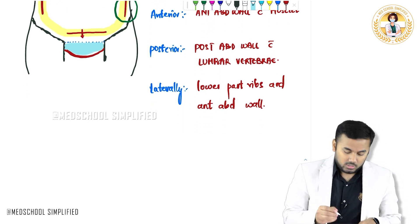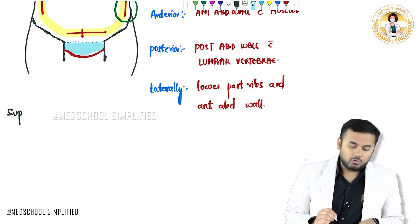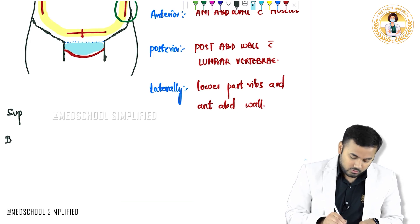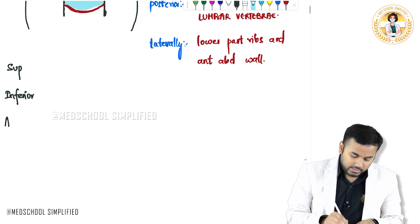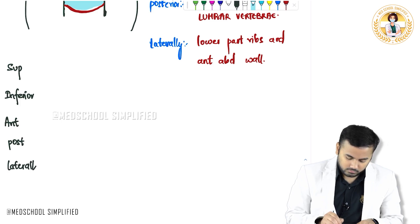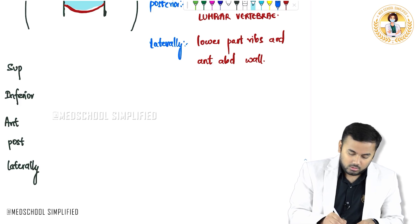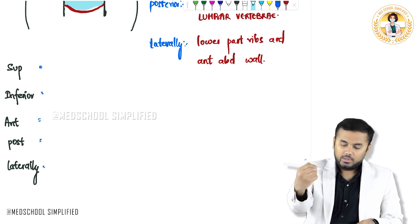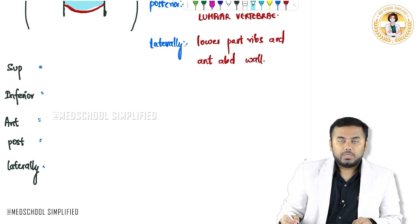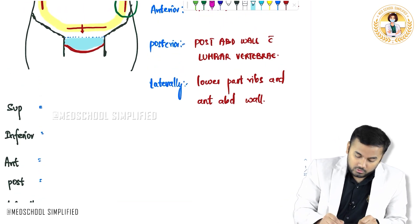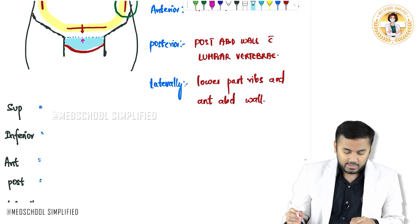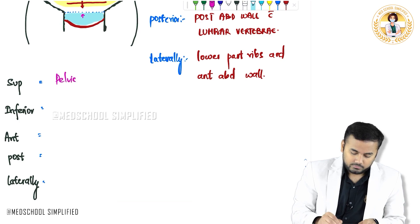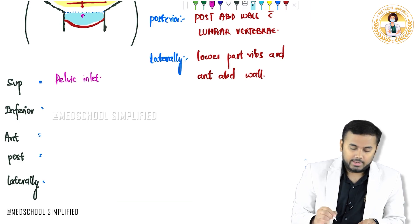So in this pelvic cavity, what are the borders? Superiorly, what do you have? Inferiorly, what do you have? And again anteriorly, posteriorly, laterally. When it comes to superiorly — these dotted lines represent the pelvic inlet. So superiorly, I have got the pelvic inlet. Inferiorly, this red color line is called the pelvic diaphragm. Inferiorly I have got the pelvic diaphragm.